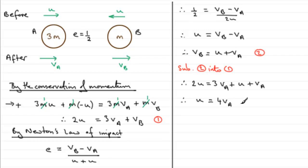Clearly then, it follows that if we divide both sides by 4, it follows that the velocity of A equals u over 4, or a quarter u. We can substitute this value back into equation 2.